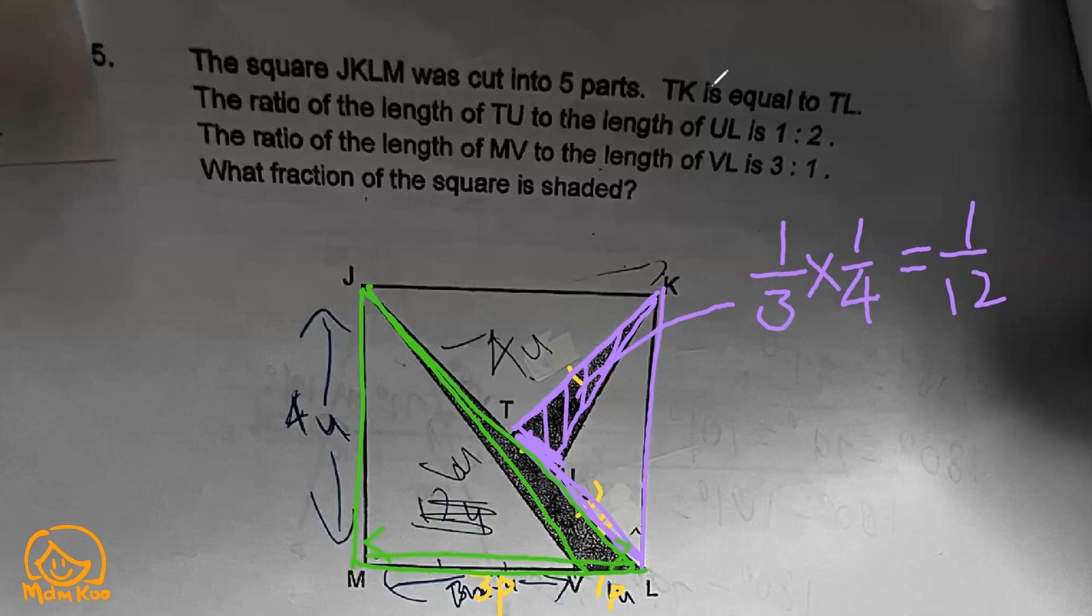The base is one out of four parts of this. Based on the area, you know that the fraction of the base will give the fraction of the area. So in this case, it will be one quarter of half of the whole square, which will give you one eighth.